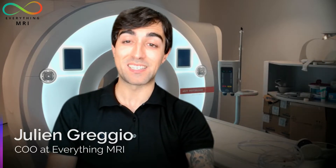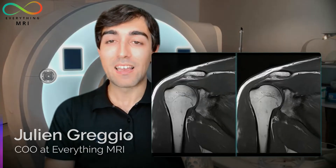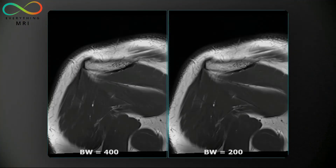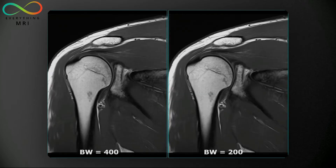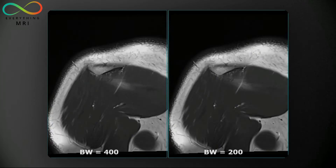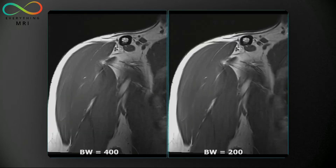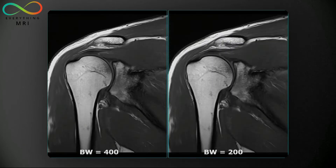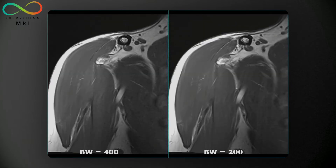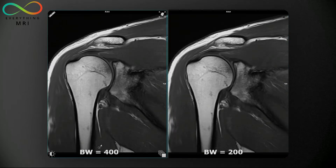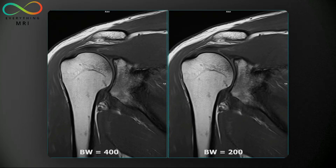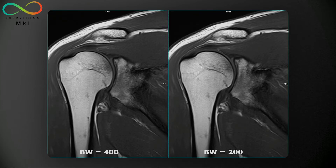Can this be generalized to every weighting? Similar experiment, different weighting. We are dealing here with a TSE coronal T1, non-fat-sat — one acquired with a high bandwidth, the other with a low bandwidth. Spotting the differences can be a little bit more challenging this time. What I can see is a very mild reduction of SNR in the sequence with higher bandwidth, especially around the muscles surrounding the shoulder, but the difference is way less marked compared to the previous example.